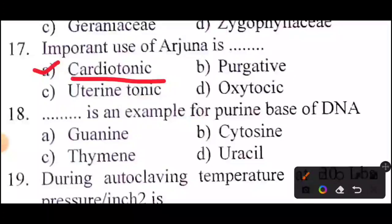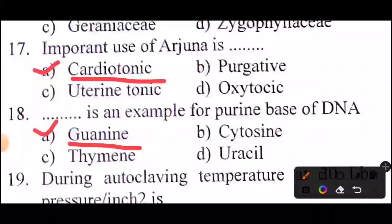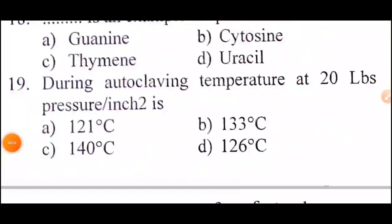Next question: Adenine (DAS) is an example of a purine base of DNA. Answer: Option A — Adenine.